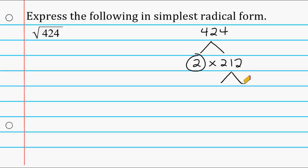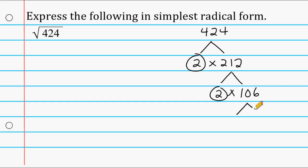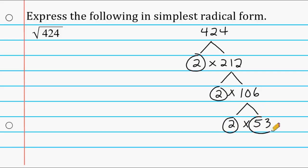212 we can produce by multiplying 2 times 106, and we go ahead and circle this 2 because it is prime. We can break 106 down into 2 times 53. And 2 is prime, and 53 is also prime, so we cannot break that down any further.